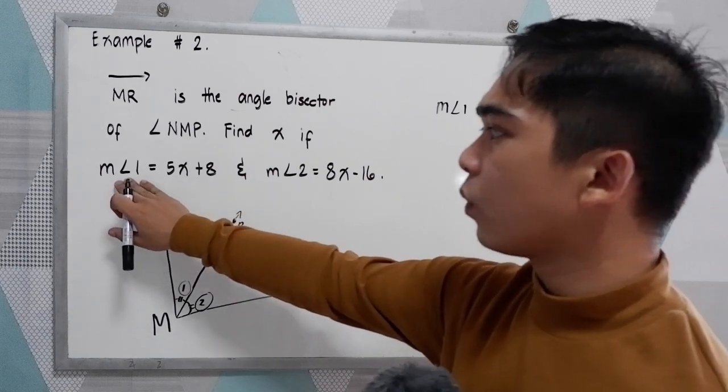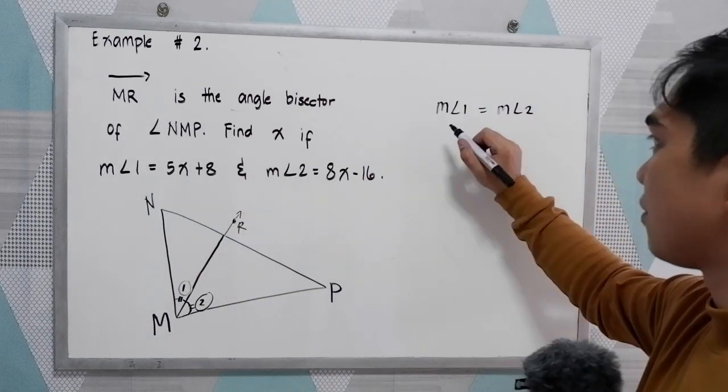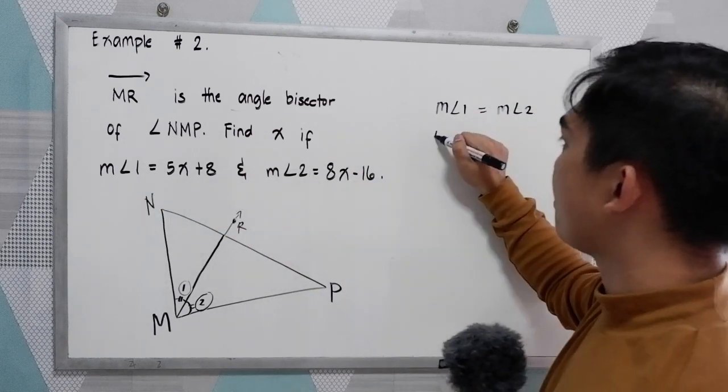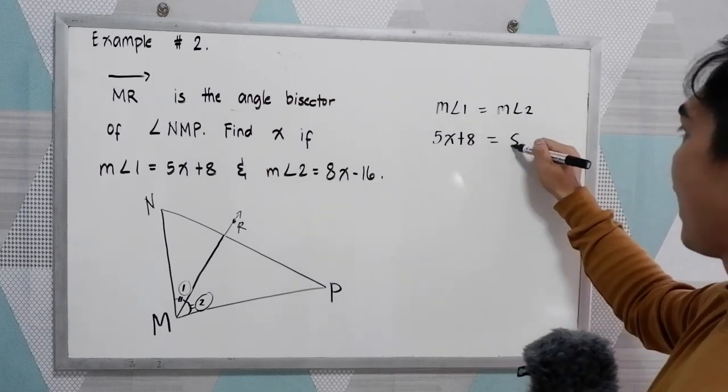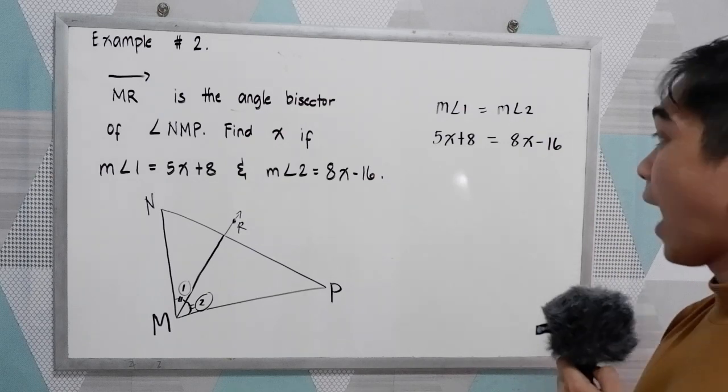Now we have the given value for angle 1 and angle 2. All we need to do is to substitute the given values. So for angle 1, we have 5X plus 8 is equal to angle 2, 8X minus 16. Now solve for X.